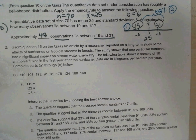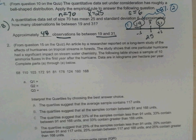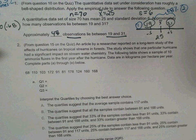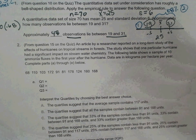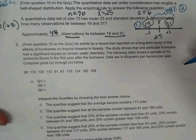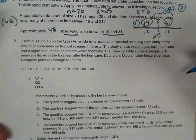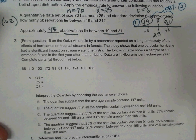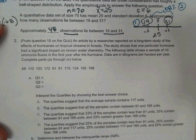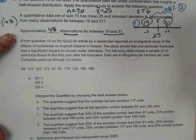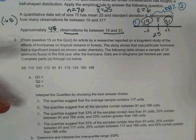Question two is from question 15 on the quiz, and it's one of those long ones. It only has two questions, though. So can you read that one for us, please? Okay. From question 15 on the quiz, an article by a researcher reported on a long-term study for the effects of hurricanes on tropical streams and forests. The study shows one particular hurricane had a significant impact on stream water chemistry. Data are in kilograms per hectare per year. Complete parts A through E below. Thanks.